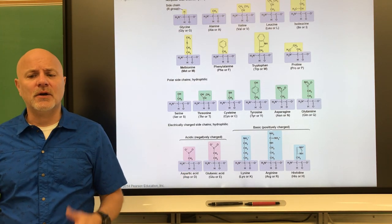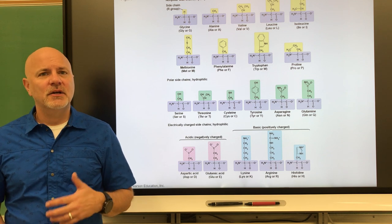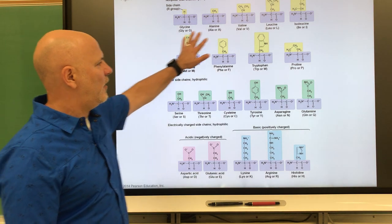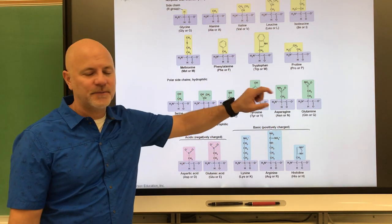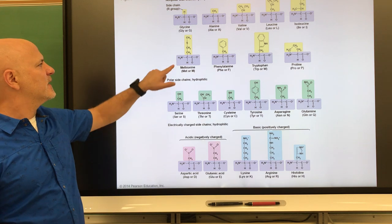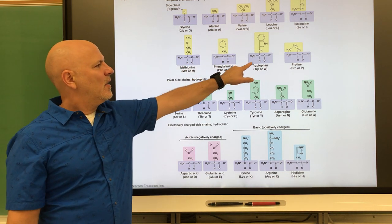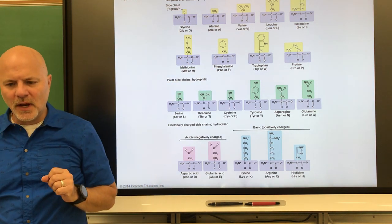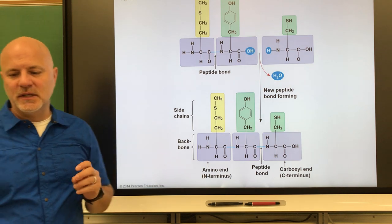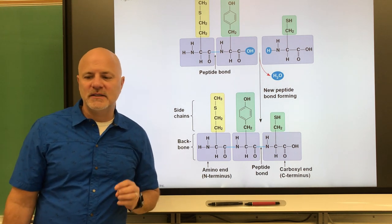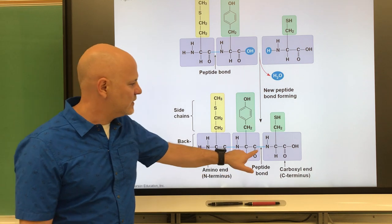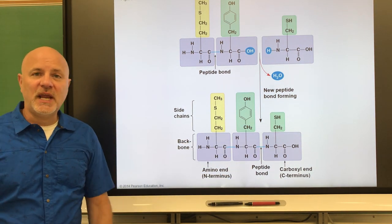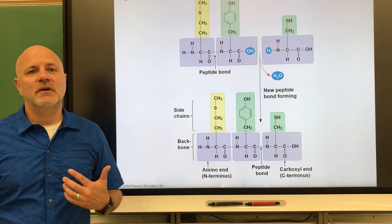Proteins are made of amino acids — amino acids are the monomers of proteins and there are 20 of them. Each amino acid shares the same bottom portion; only the top part differs. A peptide is two or more amino acids joined together by what is known as a peptide bond. A long chain of amino acids is called a polypeptide.